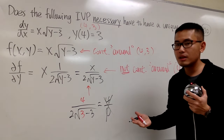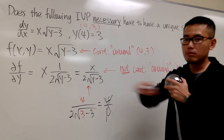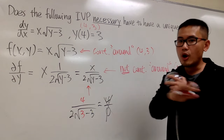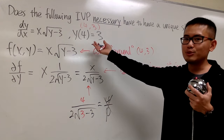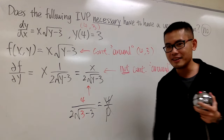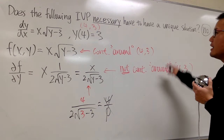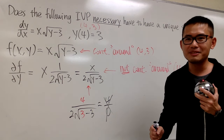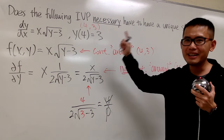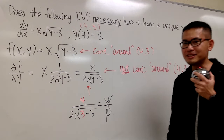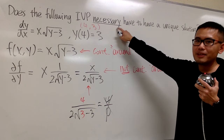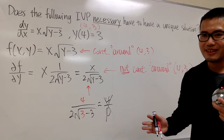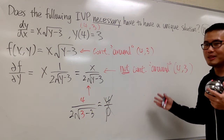Does it mean we don't have a solution? No, it doesn't. Does it mean we necessarily have to have 2 solutions? No, I cannot guarantee that either. Does that mean we have 3 or 4 solutions? I cannot guarantee that either. All I can guarantee is that I cannot say this has a unique solution. But could I still have just one unique solution? Yes, it is possible — I just cannot tell you at the moment. I cannot promise this equation has a unique solution right now.